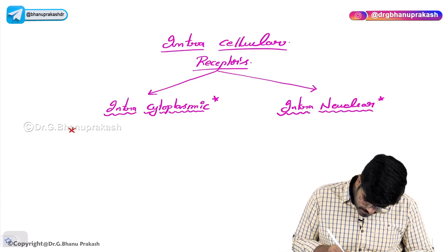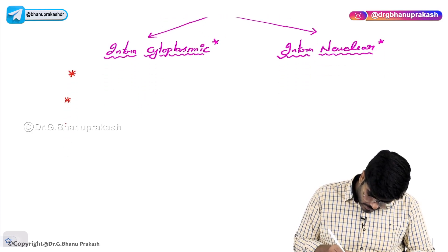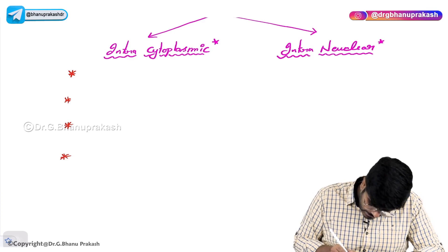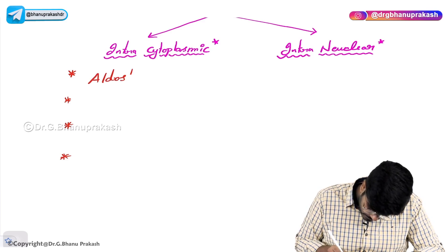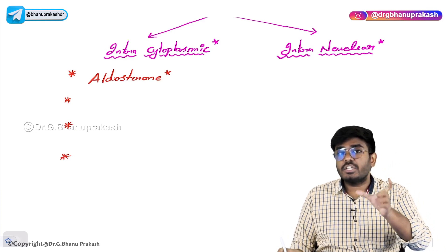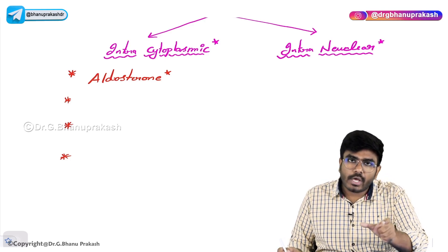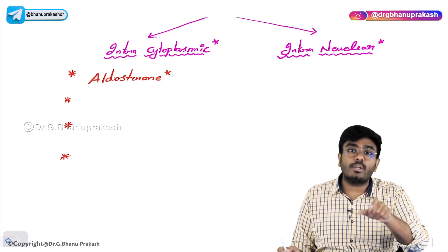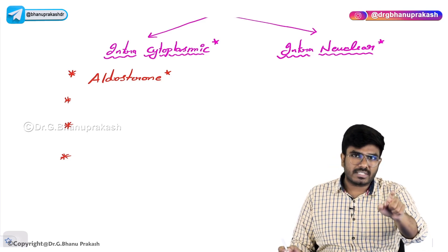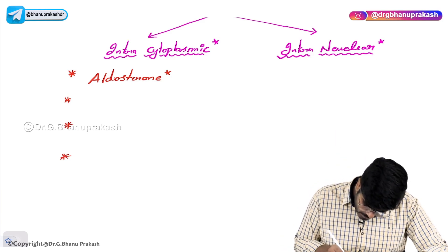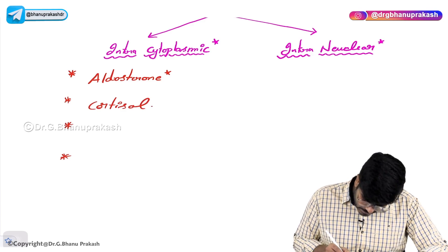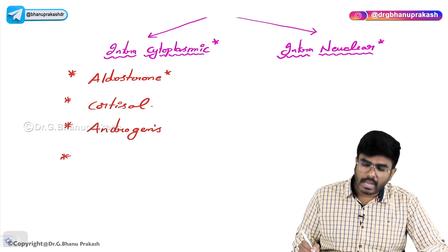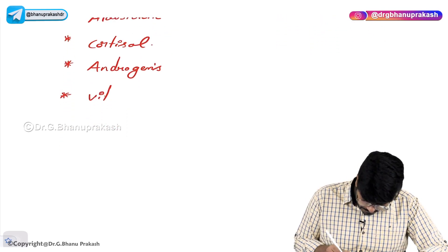Let's start with the intracytoplasmic receptors. There are four important hormones which use intracytoplasmic receptors. They include adrenal hormones like mineralocorticoids, including aldosterone. Aldosterone is a steroid hormone. As it's a steroid hormone, it can definitely cross the cell membrane, enter into the cell, and enter into the cytoplasm. Inside the cytoplasm, the mineralocorticoid receptor, or aldosterone receptor, is present. The other hormones are cortisol, androgens, and vitamin D.